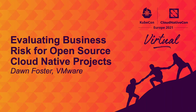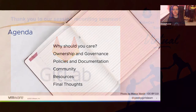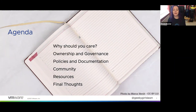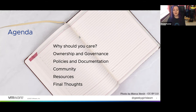Welcome to my talk. Today I'm going to talk about evaluating risk for open source cloud native projects. I'll start with a brief overview of why it's important to think about risk. I'll talk about the differences between company-owned open source projects and projects under foundations, along with some thoughts on neutral governance and how all of this impacts risk. I'll also share some thoughts about what policies and other documents to look for, along with how to evaluate the community risks, and then wrap it all up with final thoughts and links to useful resources.